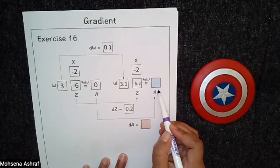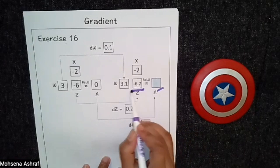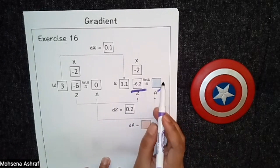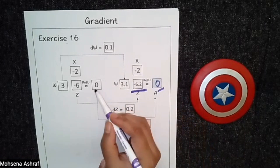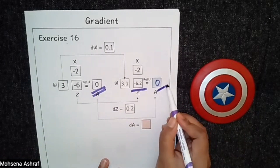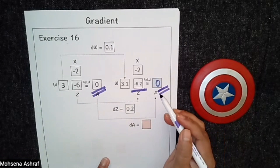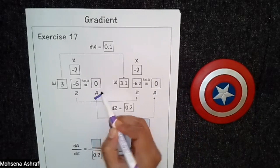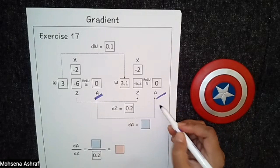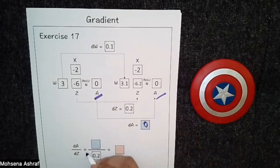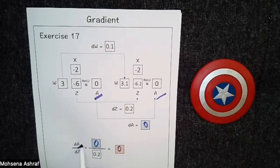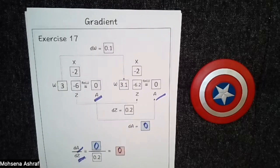Next exercise, we have to calculate the value of a. The value of z is −6.2 here. As we are getting a negative value, we know that ReLU will return 0. So a = 0 in this step and also 0 in the next step. So there is no change in the value of a, meaning da = 0. So if we put da = 0, we get da/dz = 0, meaning there is no change of a with respect to z.